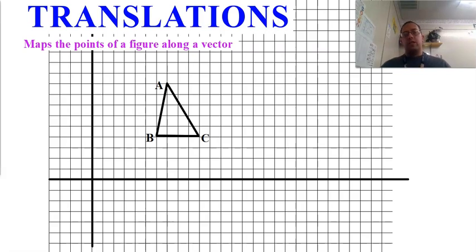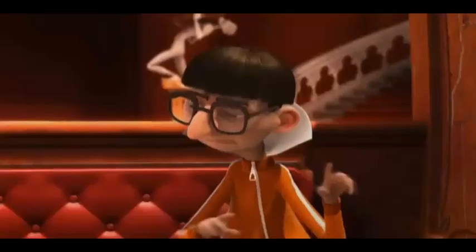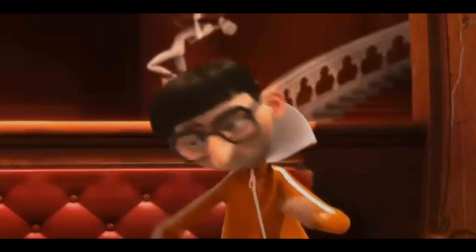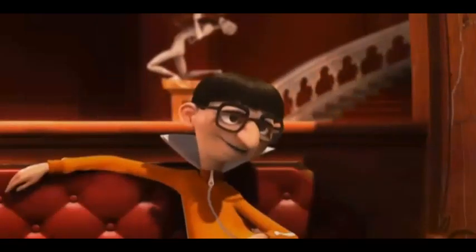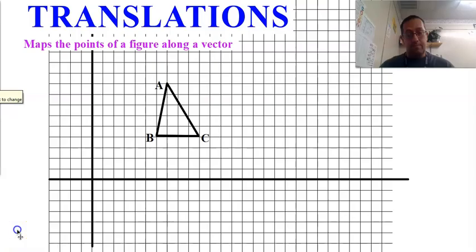Now, what a translation is, this is something that maps the points of a figure along a vector. The question here is, of course, what is a vector? It's a mathematical term, a quantity represented by an arrow with both direction and magnitude. Yes, thank you.